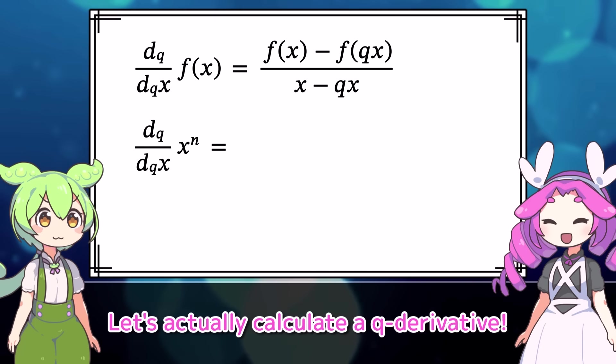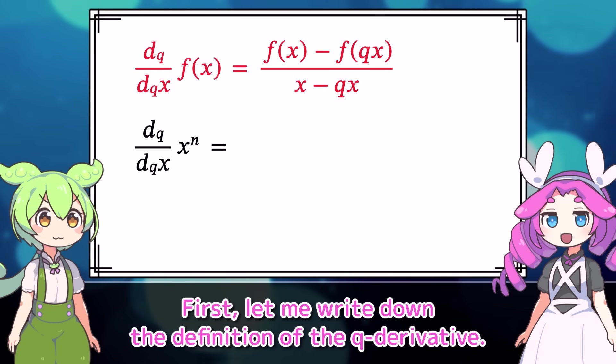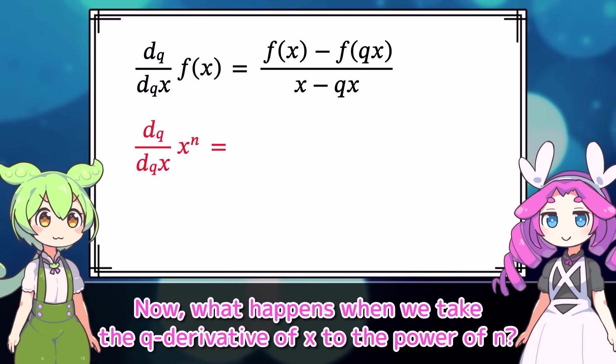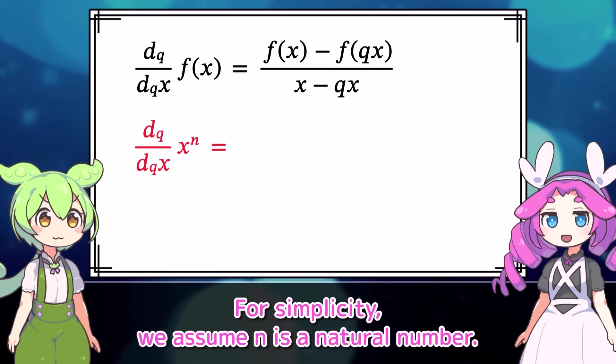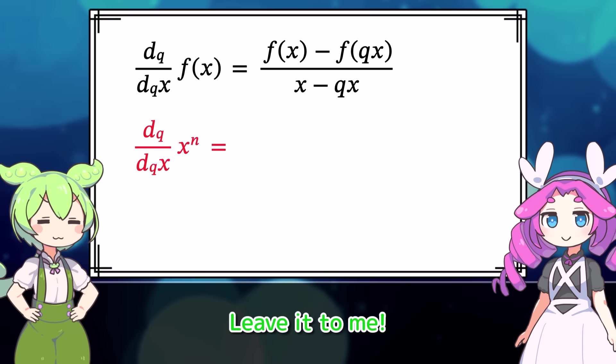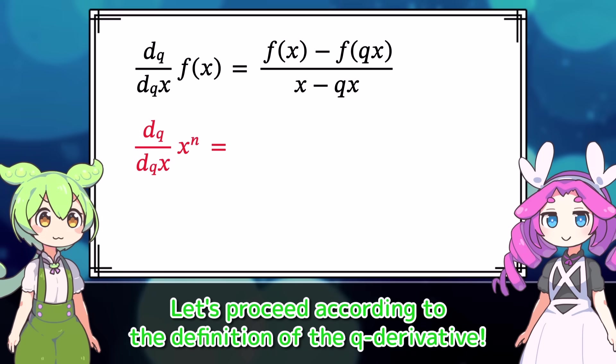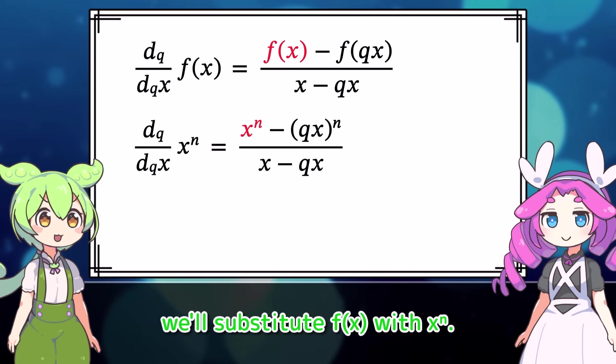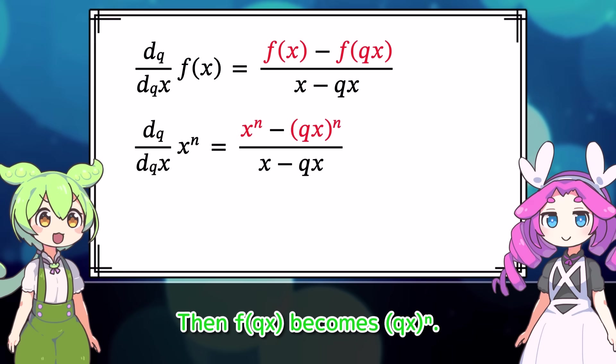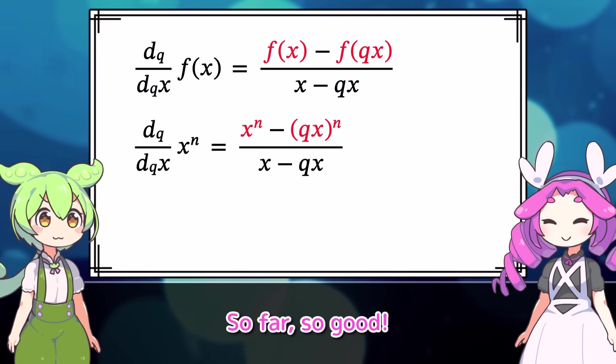Wow, I see. Thank you for waiting. Let's actually calculate a q-derivative. First, let me write down the definition of the q-derivative. Now, what happens when we take the q-derivative of x to the power of n? For simplicity, we assume n is a natural number. Leave it to me! Let's proceed according to the definition of the q-derivative. Now, since we're considering f of x equals x to the n, we'll substitute f of x with x to the n. Then, fqx becomes qx to the n. So far, so good.